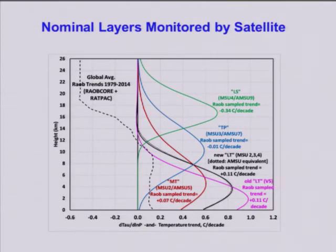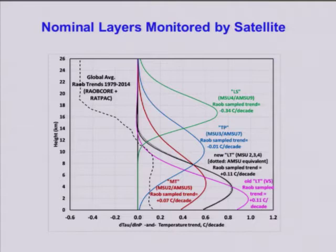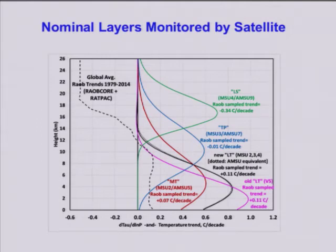These are the layers that we monitor. These curves represent the vertical weight that the satellite measures coming from different layers. The horizontal scale is the weight — the relative intensity you get from different layers — and the vertical scale is height in kilometers. The green curve is the lower stratosphere, basically unchanged. TP, the blue curve, is the tropopause layer, which is a new layer for us to be monitoring. The black curves are our new lower troposphere, which can be compared to the old lower troposphere shown in the magenta curve. MT is a raw measurement of the troposphere.